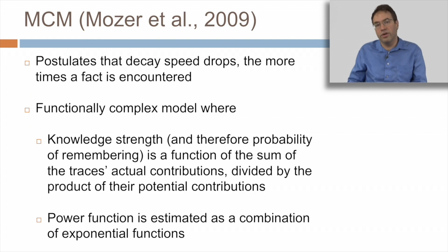A more recent competitor to ACT-R's memory equations is MCM by Moser and his colleagues. This model postulates that the decay speed drops the more times the fact is encountered. So in ACT-R, the decay speed is constant whether you've encountered something one time or a million times. But in MCM, the more times you've encountered a fact, the slower it is to decay. MCM is represented by a functionally complex model where knowledge strength, and therefore the probability of remembering, is a function of the sum of the trace's actual contributions divided by the product of their potential contributions. And a power function is estimated as a combination of exponential functions. Each encounter with the knowledge has an exponential function for decay, but it turns out to sum up to a power function.